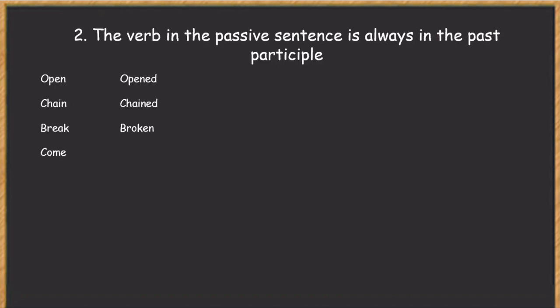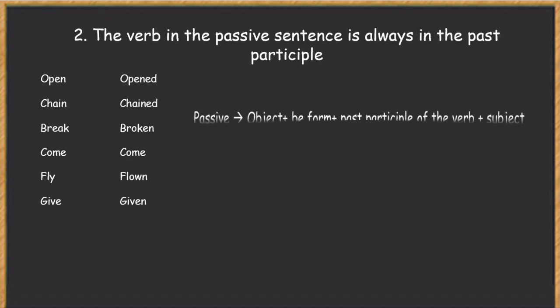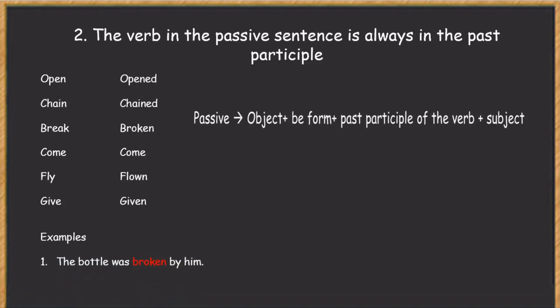Some more examples: 'come' — the past participle is again 'come'; 'fly' — the past participle is 'flown'; 'give' — the past participle is 'given.' In the passive construction, the object comes first, then the be form, then the past participle, then the subject. For example: 'The bottle was broken by him' — 'broken' is in past participle form. 'The book was given to her' — 'given' is again in the past participle form.